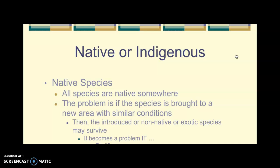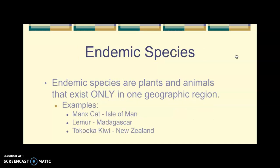You've maybe heard 'indigenous' in your history classes or world cultures — indigenous people are native to an area. So indigenous species are species that are native to a place; it's where their natural home is. A native species belongs somewhere. The other term is endemic — which was just a typo in your notes — and endemic is a good word to know: it refers to plants or animals that exist only in one geographic region.